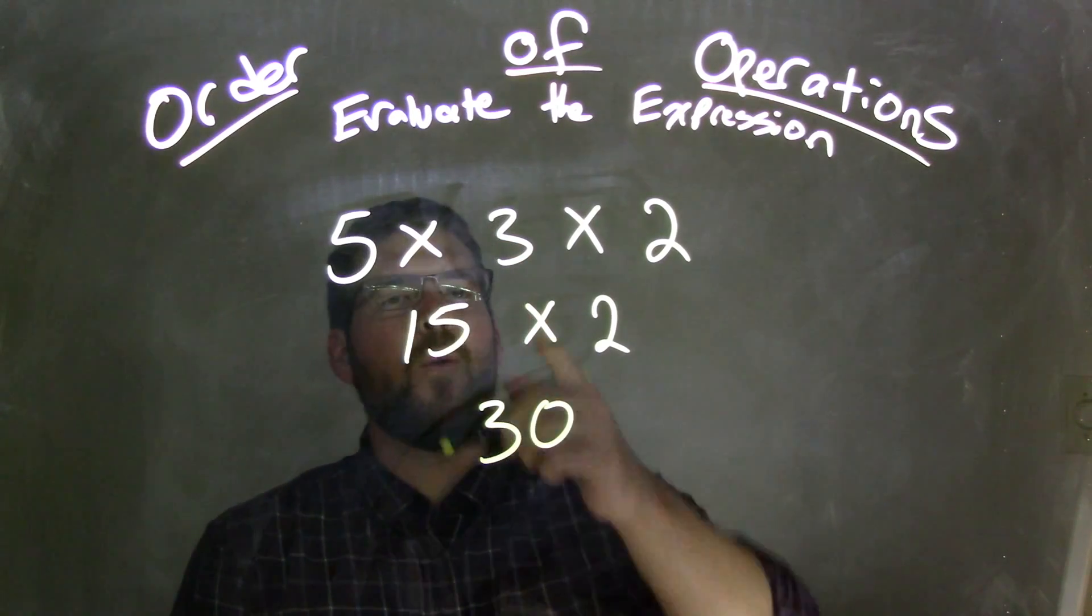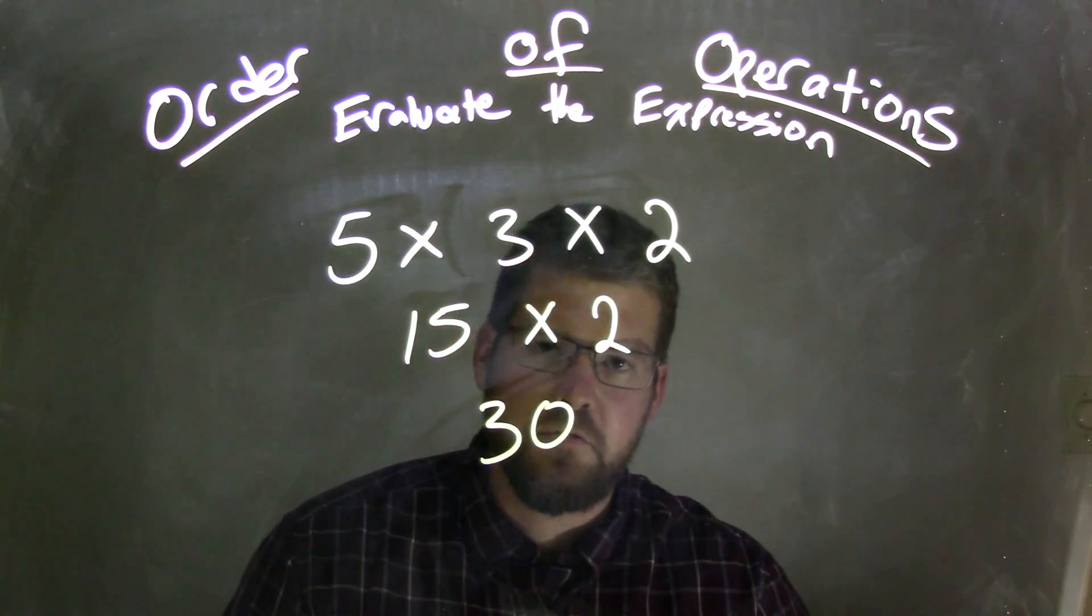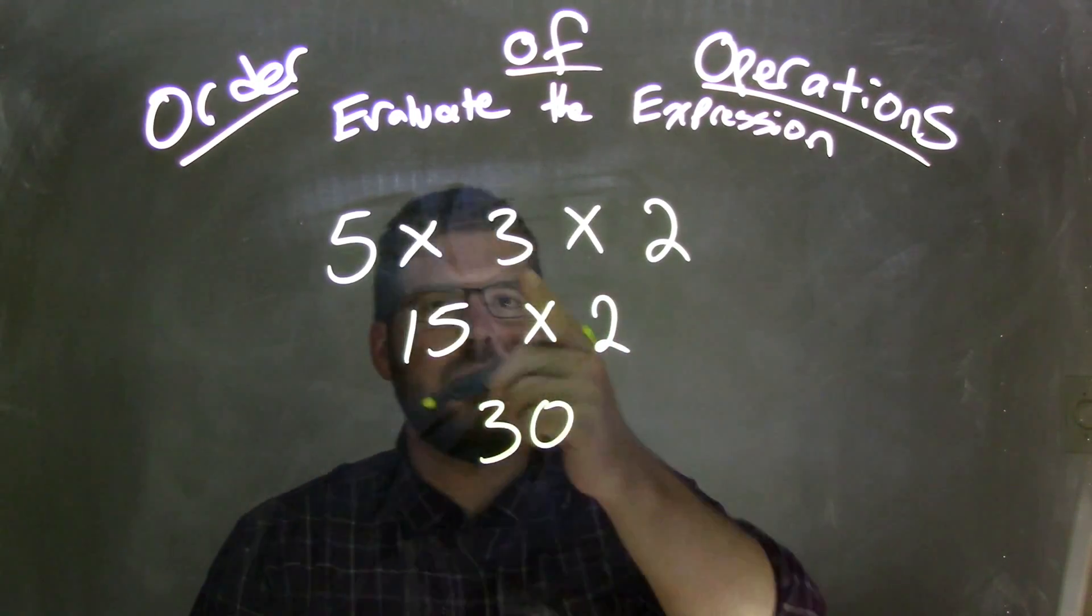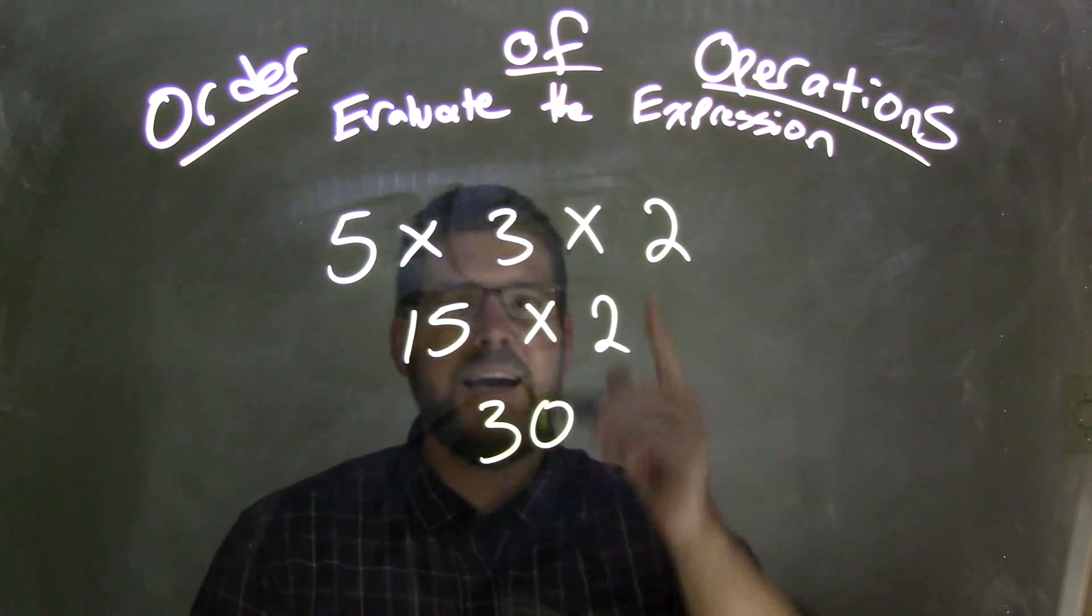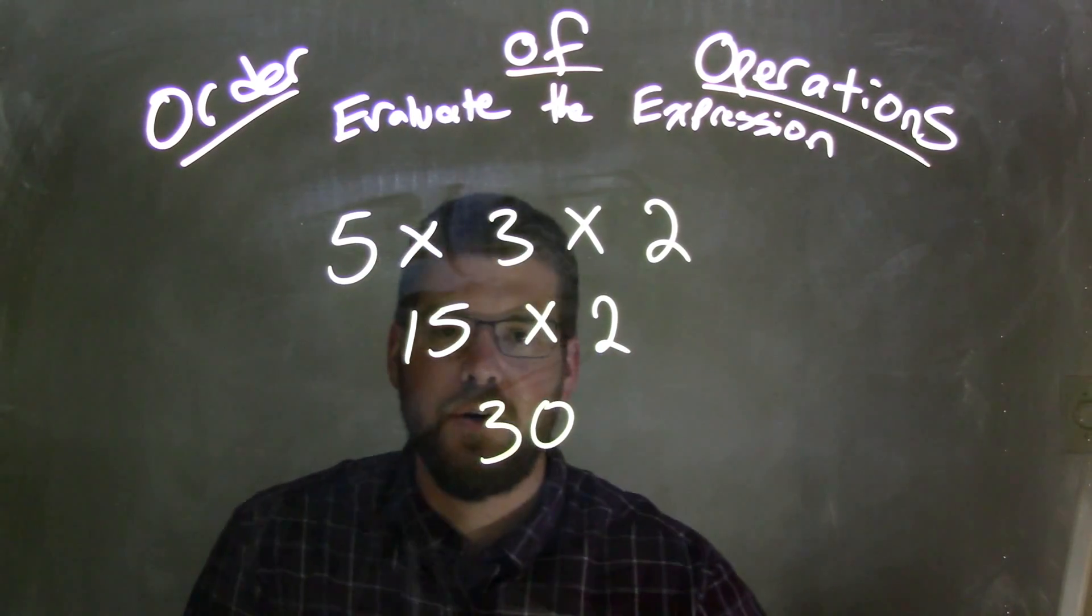Now, you wonder, well, what if I did 3 times 2 first? That also would have worked. 3 times 2 comes out to be 6, 6 times 5 is also 30.